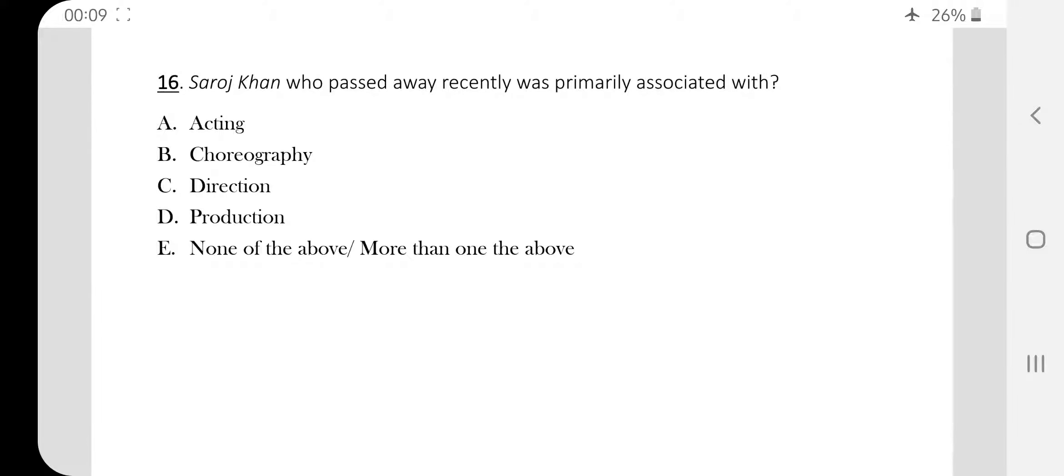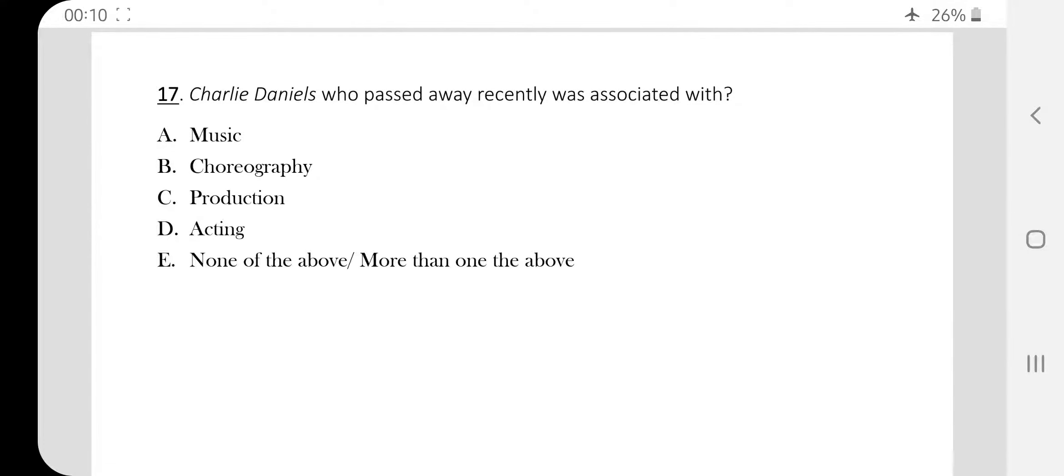Question number sixteen. Saroj Khan who passed away recently was primarily associated with choreography. Question number seventeen. Charlie Daniels who passed away recently was associated with music. He was an American musician and singer, so the correct option is option E, music.